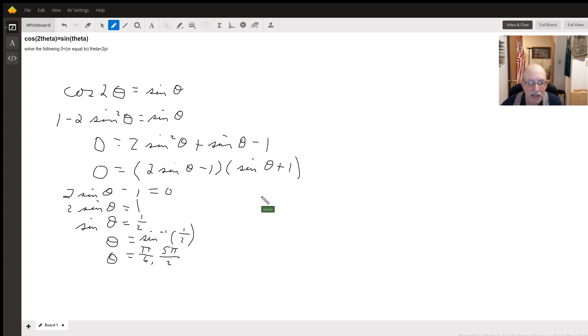Then we're going to take sine of theta plus 1 equals 0. This gives us sine of theta equals negative 1. Theta is going to equal the inverse sine of negative 1, which is 3 pi over 2.